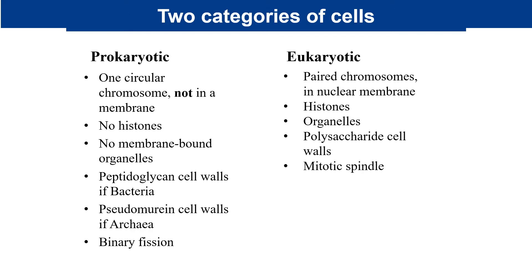Here we have a list that compares and contrasts the two major categories of cells. Prokaryotes — bacteria and archaea — have one circular chromosome, and it's not enclosed in a nuclear membrane. Eukaryotic cells have paired chromosomes and the DNA is linear, like the X and Y chromosomes in the human genome. Prokaryotes do not have histones, which are nuclear proteins for packaging of DNA.